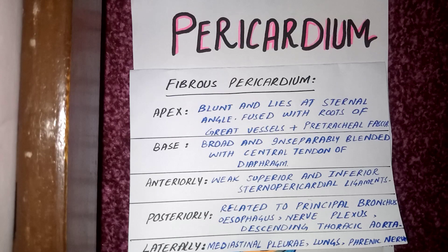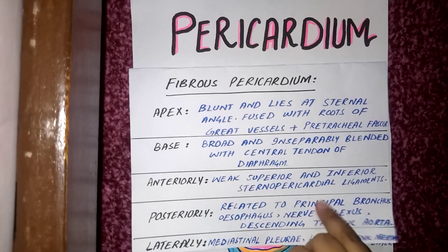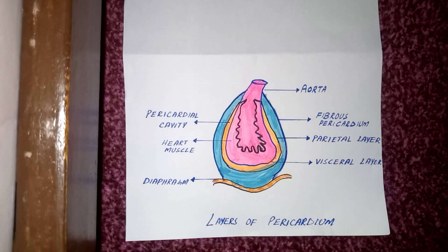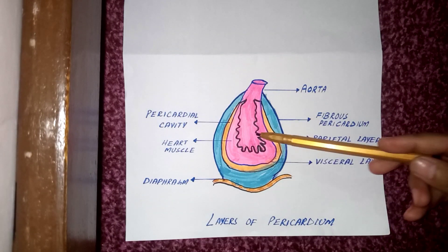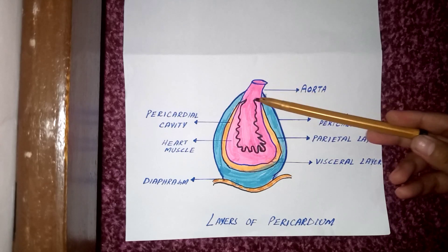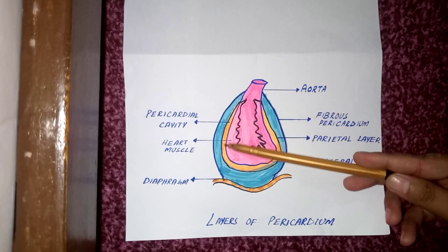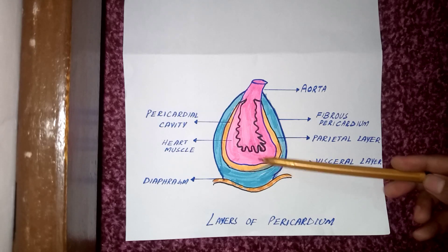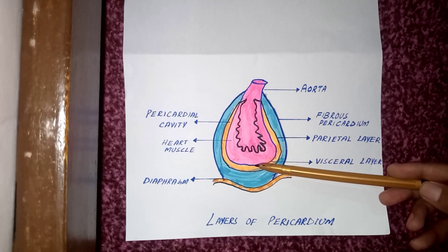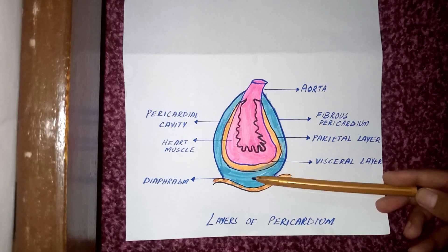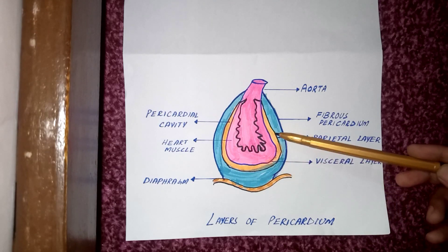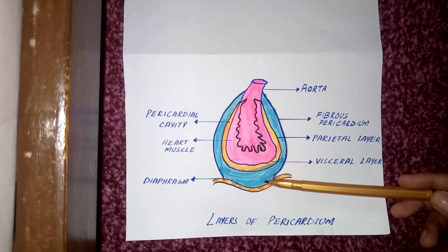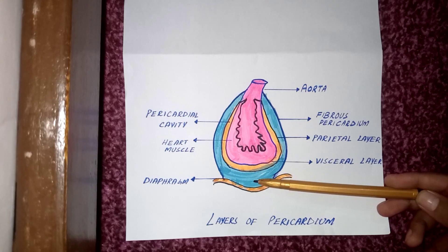In this diagram you can see the heart musculature, and here we have the ascending aorta. Outside the heart musculature we have the serous pericardium, and just outside the serous pericardium we have the fibrous pericardium.